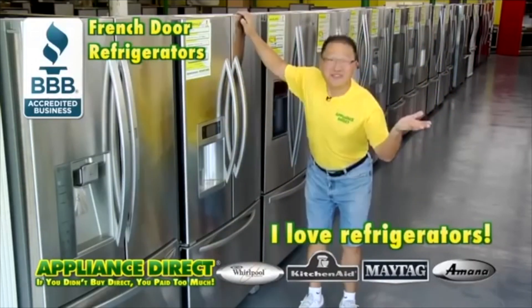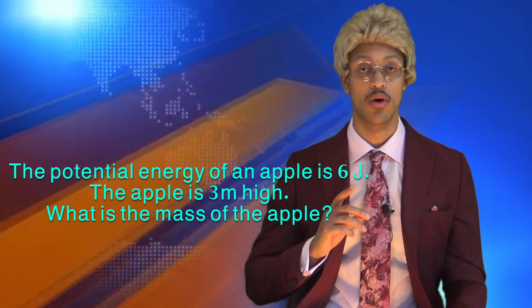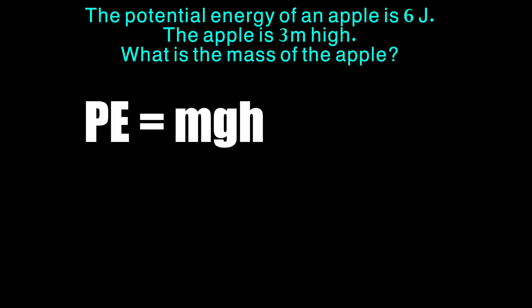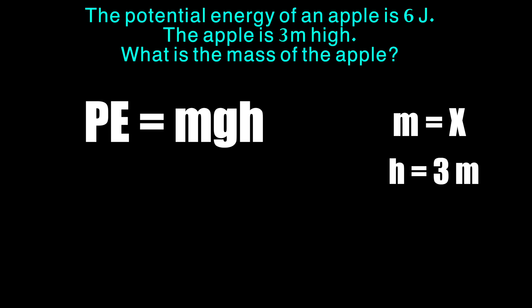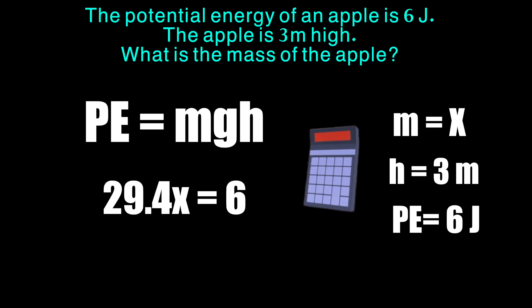The potential energy of an apple is 6 joules. The apple is 3 meters high. What is the mass of the apple? This problem is switching things up — they're giving us the potential energy and the height, and asking for the mass. We can still solve this with the same formula, PE equals mgh. We'll plug in what they gave us and solve for the variable M, the mass. We'll plug 6 joules into the potential energy value, 3 into the height, and 9.8 meters per second squared into G for gravity, then solve properly to find our answer.